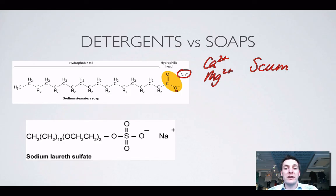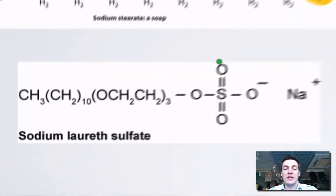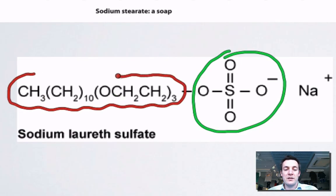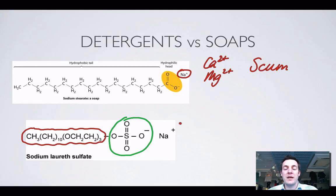Scum is a problem because if the soap is involved in a precipitate it can't carry out its cleaning action. Detergents, instead of having the salt of a carboxylic acid at the end, have different groups. They still have the hydrophobic tail and the hydrophilic head, but they don't form precipitates with the ions commonly found in water, so they don't form scum — and that's a major advantage because they continue to clean even when highly charged ions are present.